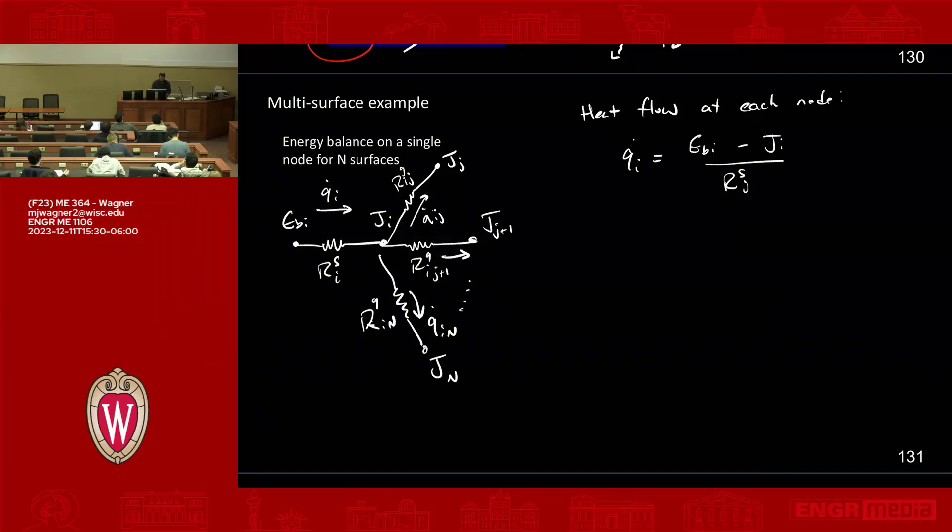The other thing that we have is that there's a known heat transfer between nodes. And that would be given by Q dot I to J is equal to JI minus JJ over RGI,J.